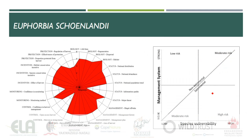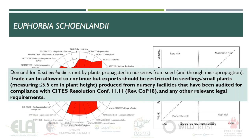Outcomes of the NDF indicate that the species is at higher risk of unsustainable use, which would render the trade detrimental. However, the demand for the species is met by plants propagated in nurseries and trade should therefore be allowed to continue, but exports should be restricted to small plants produced from facilities that have been audited for compliance with CITES resolutions.